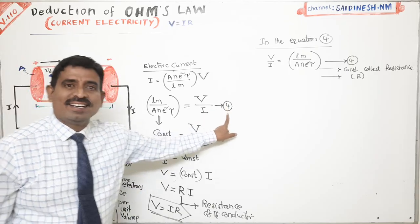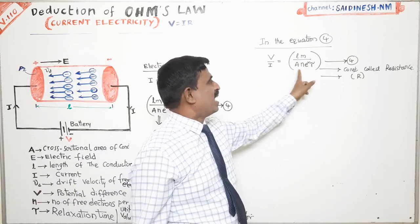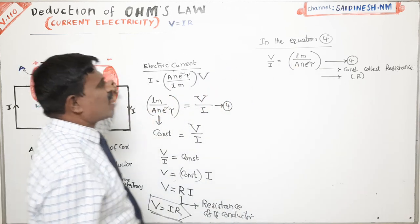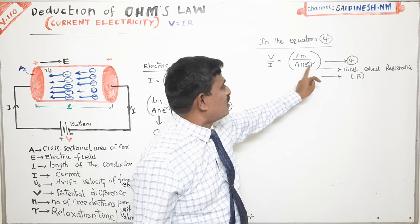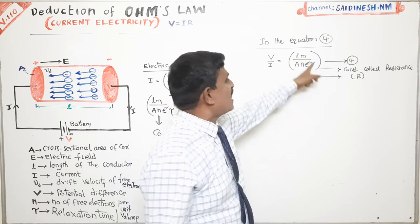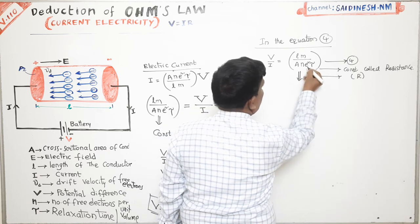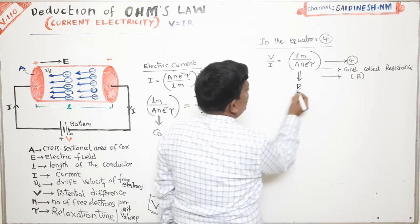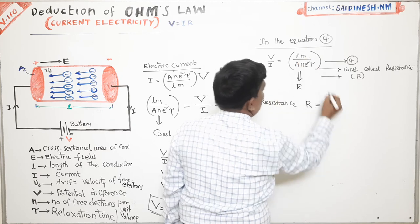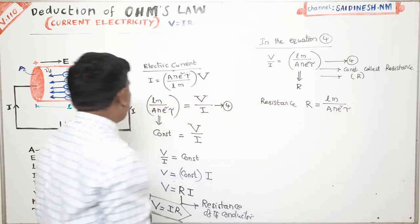From equation 4, we got: V/I equals L·m/(A·n·e²·τ), which equals R. This means R equals L·m/(A·n·e²·τ). Since V is proportional to I (with R as the proportionality constant), we can state Ohm's law: at a given temperature, the strength of current through a conductor is directly proportional to the potential difference across it, under constant physical conditions.